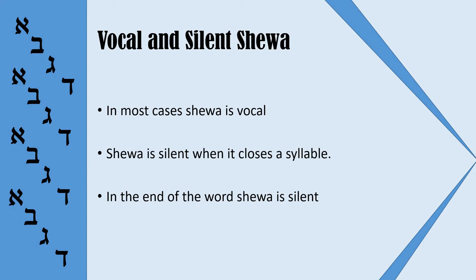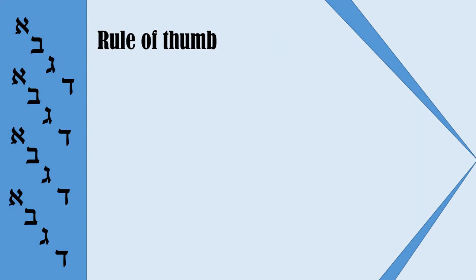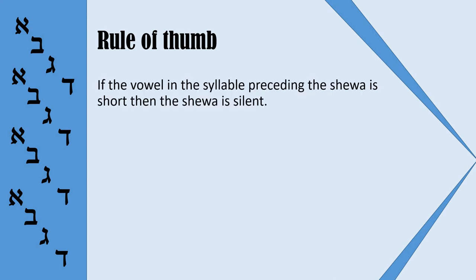Now let us consider the rule that Sheva is silent when it closes a syllable. It may seem a little bit complicated, but I will suggest a rule of thumb. This rule probably does not cover all cases, but in most cases it will work very well. If we want to understand if Sheva is silent or vocal, we need to look at the preceding syllable. If the vowel in the preceding syllable is short, it means the Sheva is silent.